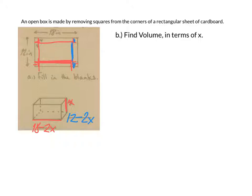We can use those three pieces of information to find the volume in terms of x, because the volume of a box is the area of the base, so length times width, times the height of the box.